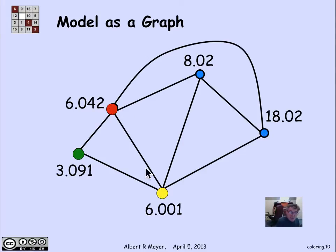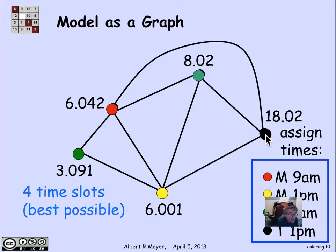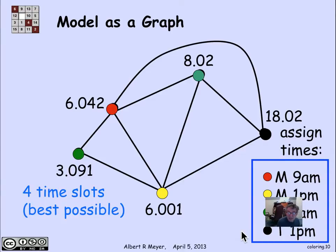Let's color the exam graph. There's a triangle, so we need three different colors for it. For another triangle, reuse green to be economical. One vertex ends up adjacent to three different colors and must be colored with a fourth. Four colors turn out to be best possible here. The schedule: 6042 on Monday at 9 AM, 6001 on Monday at 1 PM, 802 and 3091 both on Tuesday at 9 AM, and 1802 on Tuesday at 1 PM.